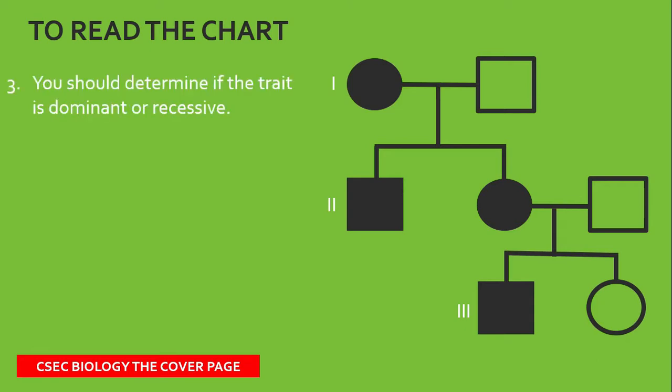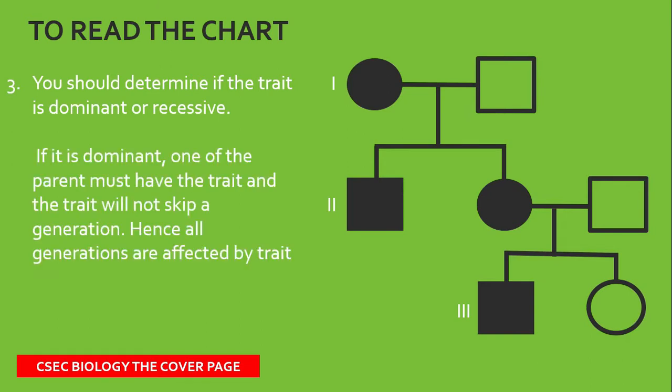Now to read the chart, you should determine if the trait is dominant or recessive. If it is dominant, one of a parent must have a trait and the trait will not skip a generation. Hence, all generations are affected by the trait. This pedigree chart shows dominance.